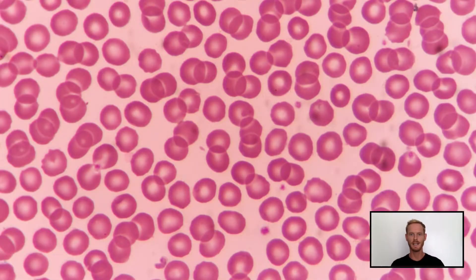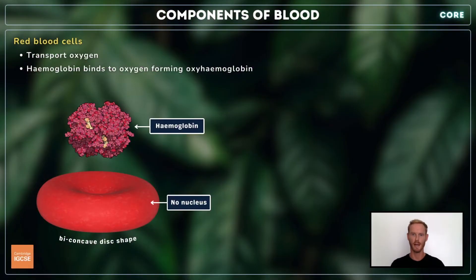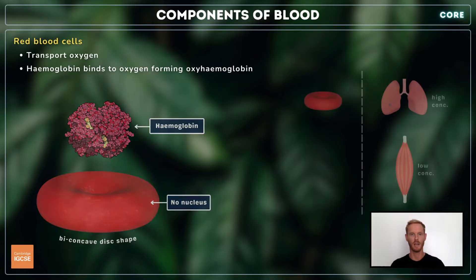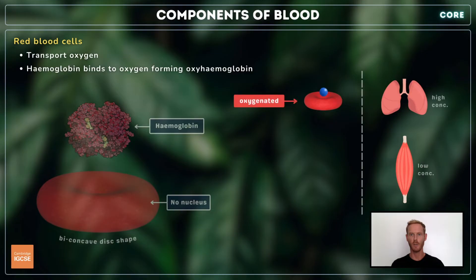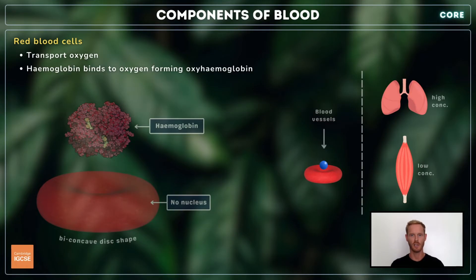Red blood cells are tiny disc-shaped cells that transport oxygen throughout the body. They have no nuclei or organelles, and their cytoplasm contains a red pigment called haemoglobin. In the lungs, where oxygen concentration is high, haemoglobin combines with oxygen, forming oxyhaemoglobin. In places where oxygen concentration is low, such as the working muscles, oxygen dissociates from haemoglobin and diffuses into the cells down a concentration gradient.